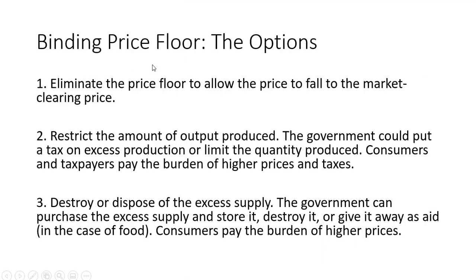With a binding price floor, there are basically three options. One: eliminate the price floor to allow the price to fall to the equilibrium price, or the market clearing price. Two: restrict the amount of output produced — the government could put a tax on excess production or limit the quantity produced. Consumers and taxpayers, however, are going to pay the burden of higher prices and higher taxes.